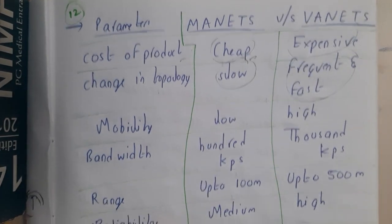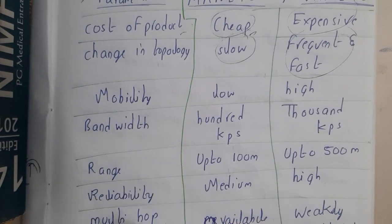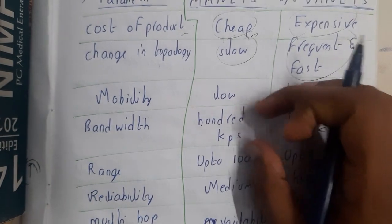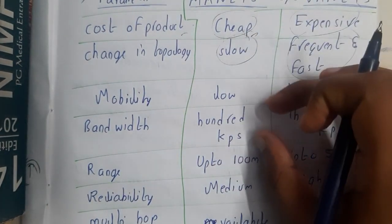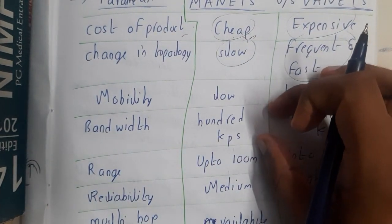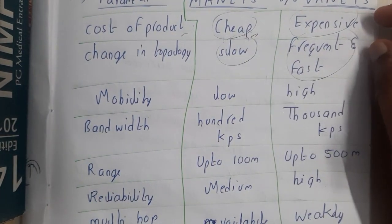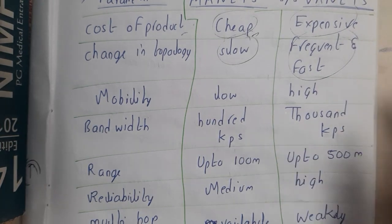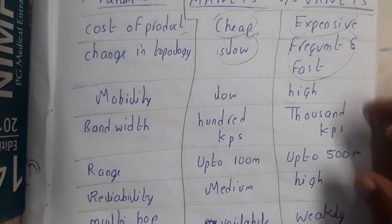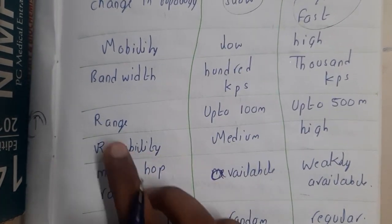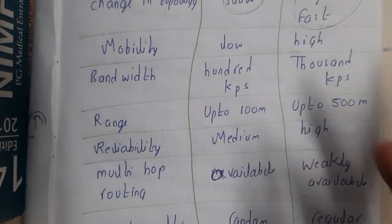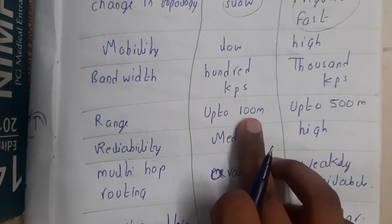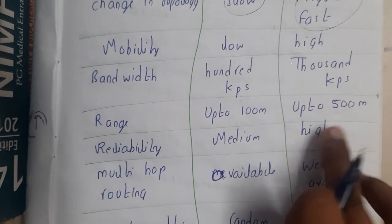The bandwidth in MANETs is also low, in the range of hundreds of kbps, since they are cheap and slow. The expensive VANETs have high bandwidth, in the range of thousands of kbps. Range is also directly proportional — MANETs have a range of up to 100 meters whereas VANETs have a range of up to 500 meters.